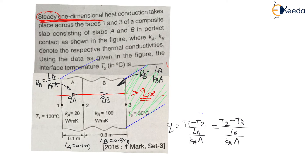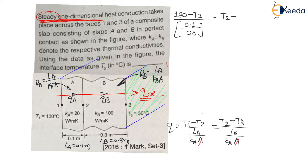Putting in the values: (130 − T2) divided by (0.1/20) equals (T2 − 30) divided by (0.3/100). From both sides the area gets cancelled. So we have (130 − T2) / (0.1/20) = (T2 − 30) / (0.3/100). In this complete equation, only T2 is unknown.